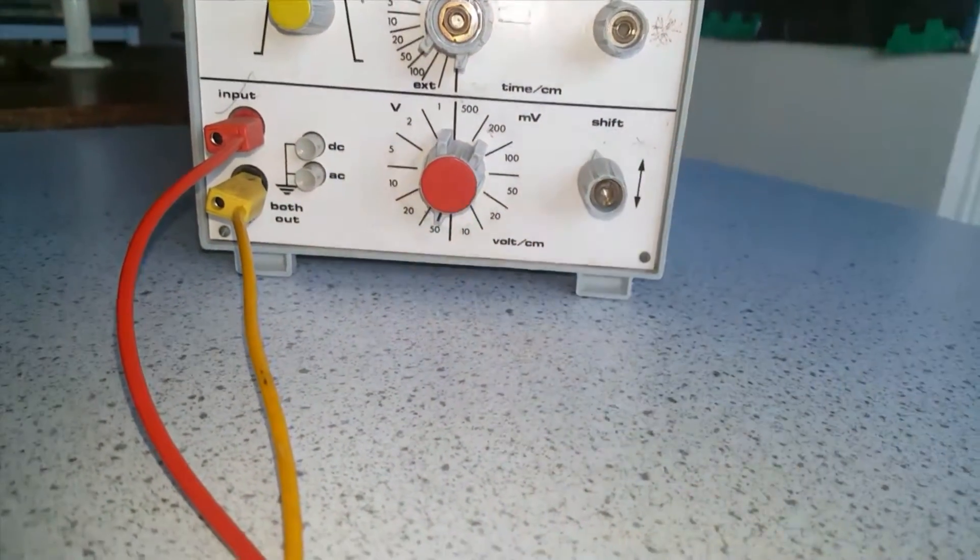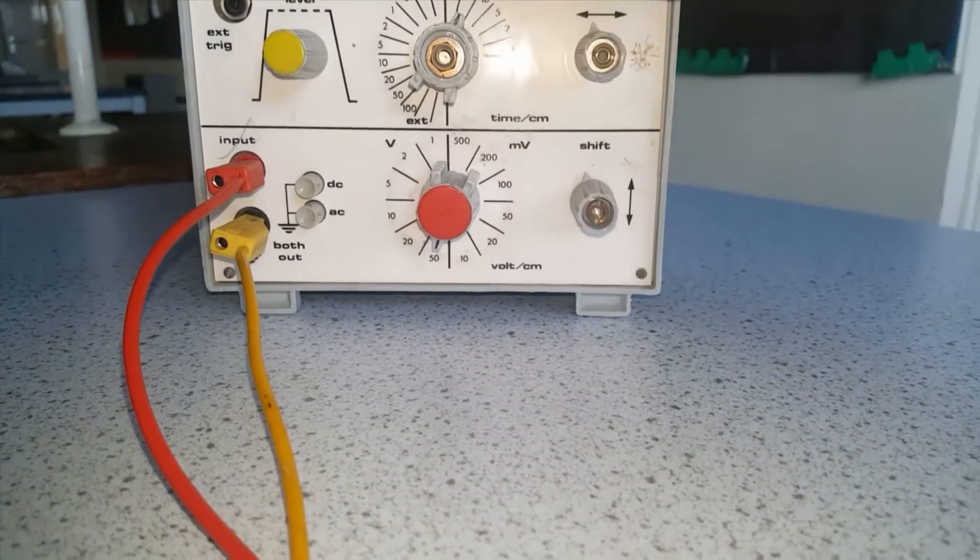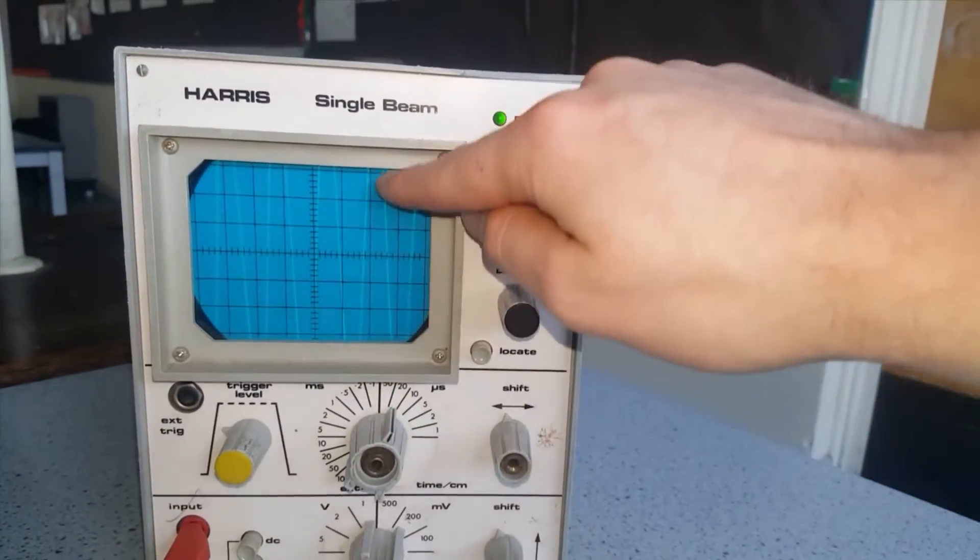And this part represents the y-axis, so how many volts or millivolts each centimetre on the y-axis represents.